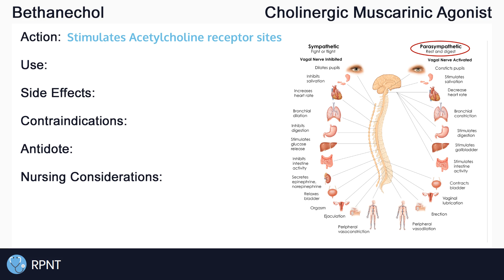The main effect that bethanachol has on the parasympathetic nervous system is the effect on the urinary system. Bethanachol is used to treat urinary retention by promoting urination. More specifically, bethanachol acts by increasing the tone of the detrusor muscle, which promotes bladder contraction and urination.